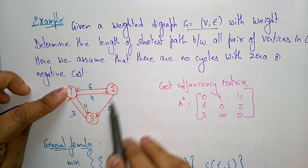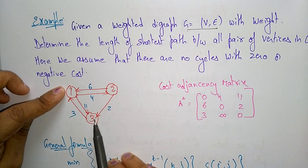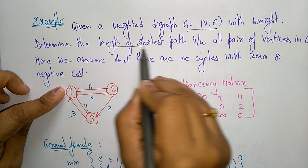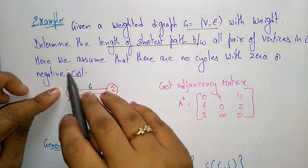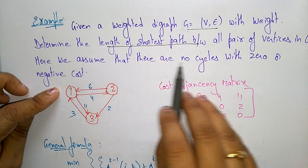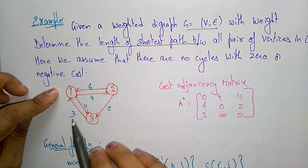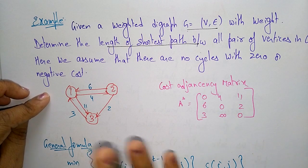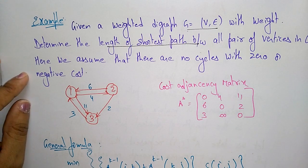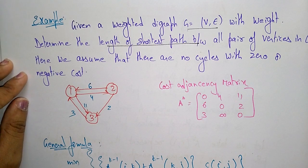There are three different vertices. We have to find the length of the shortest path between all pairs of vertices. We assume that there are no cycles with zero or negative cost, so there are no negative values and no zero cost cycles.